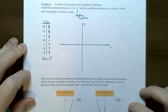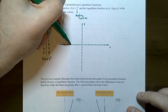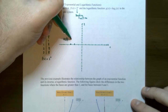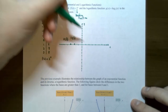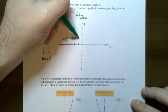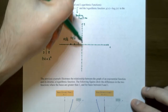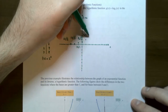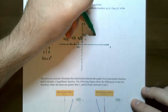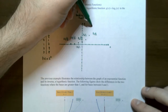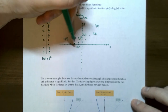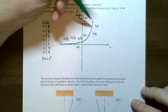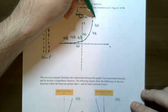Plotting the points: negative 3, 1/8 — barely above the x-axis; negative 2, 1/4 — slightly above the x-axis; negative 1, 1/2; then 0 comma 1; 1 comma 2; 2 comma 4; and 3 comma 8. You should notice that this is what exponential growth functions look like — they are growing or increasing from left to right. This is 2 raised to the x power.